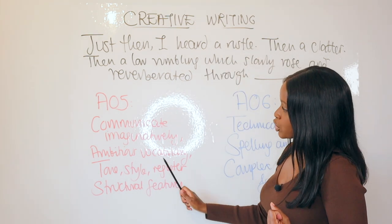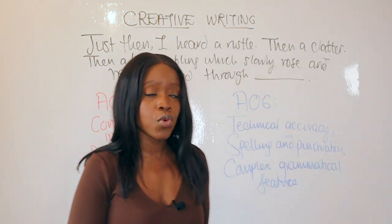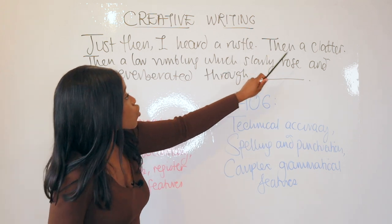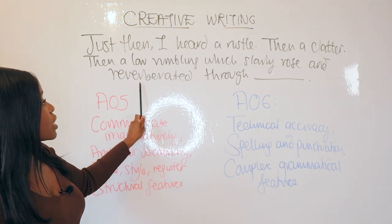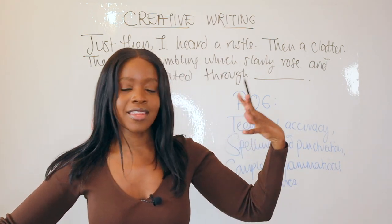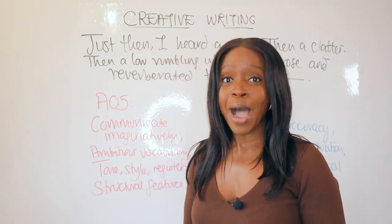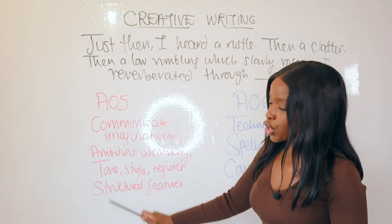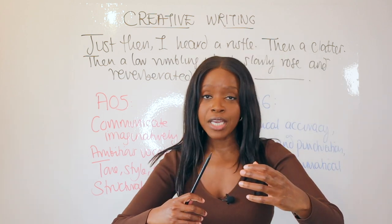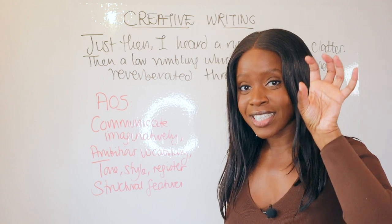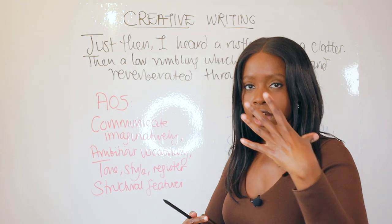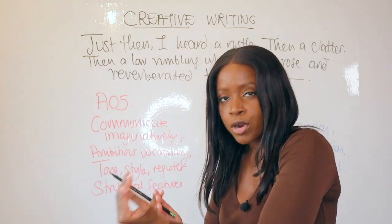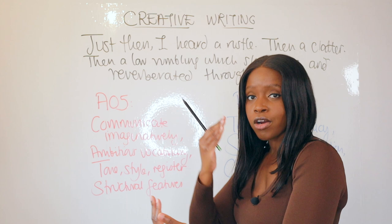It also uses lots of ambitious vocabulary — rustle, clatter, rumbling — with plenty of onomatopoeia. The word 'reverberate' meaning 'to echo' is really powerful, ambitious language. Equally, the tone is now quite dark, scary, and ominous. In terms of style, because it's written in a mix of simple and complex sentences, the style is very powerful. You're speeding up the pace and then slowing it down, which is exactly what your problem paragraph should do — taking your reader on an emotional roller coaster.